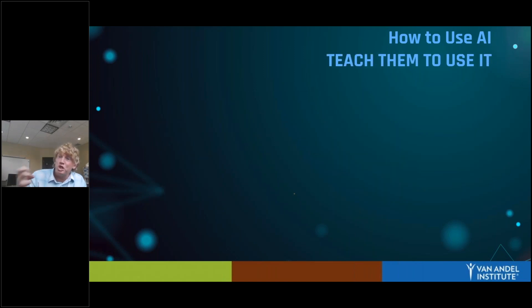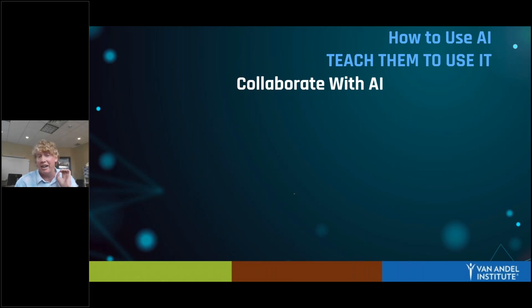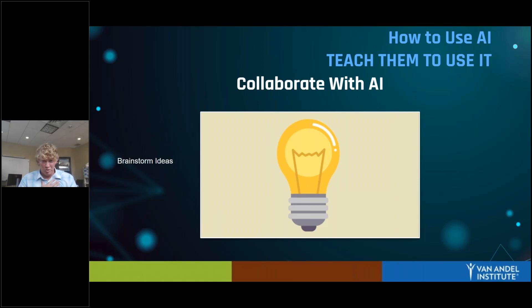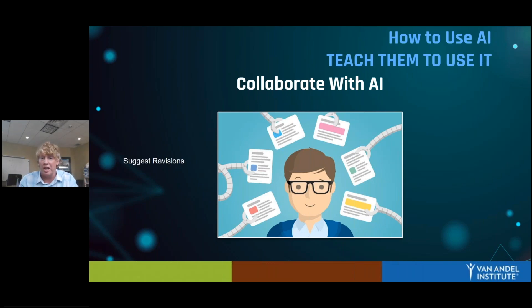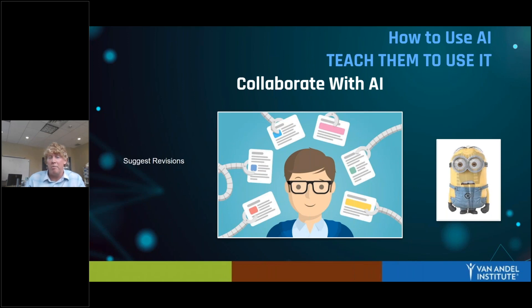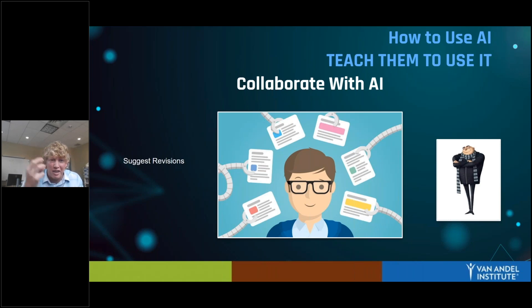Let's explore how to use AI from the student-facing side. First, we want to teach them to use it — establish the attitude that they're going to collaborate with AI. You can have it brainstorm with them: if students get stuck coming up with an idea for a project, have them ask ChatGPT for a list of 30 ideas, then think about what they're interested in and select from those options. You could have it suggest revisions for them — it's a great way to function like peer feedback, something I always struggled to get right when I was teaching. Students can function like an executive, picking and choosing from revisions they think will improve their piece.